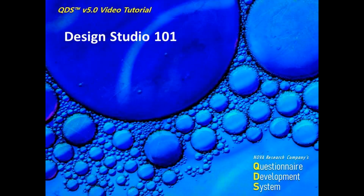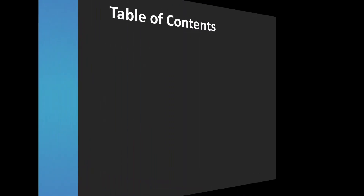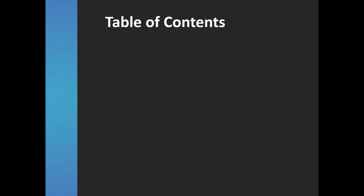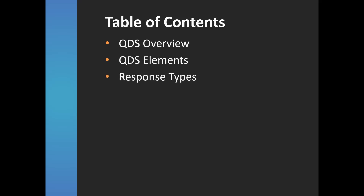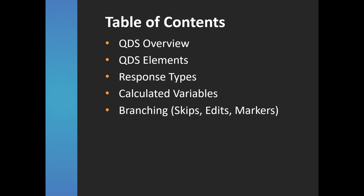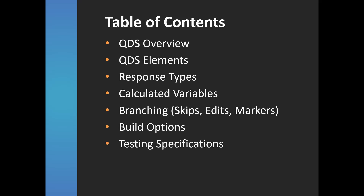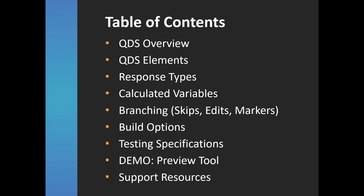Welcome to QDS Design Studio 101. This tutorial video will cover the basics of the Design Studio, starting with an overview and continuing to learning about QDS elements and response types. Next, we'll do a brief overview of calculated variables and cover different branching options using skips, edits, and marker elements. Finally, we'll review how to finalize your survey for administration by using build options and testing features. A demonstration of the preview tool will encompass all of the topics covered. A listing of QDS support resources is available at the end.